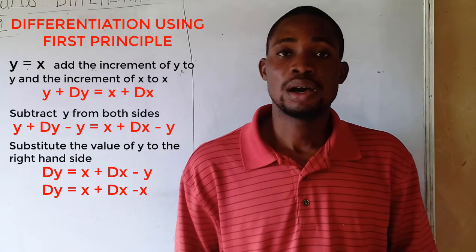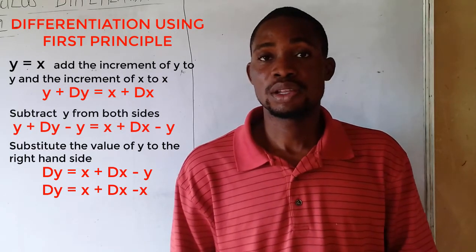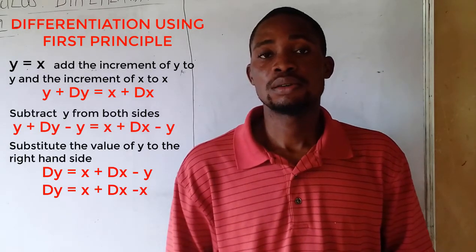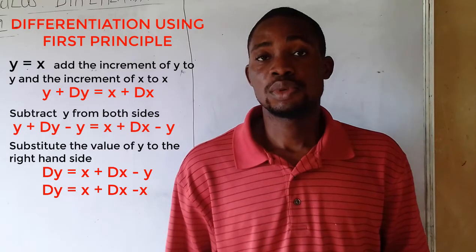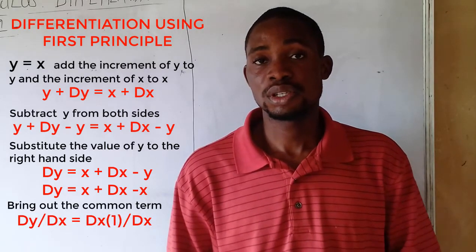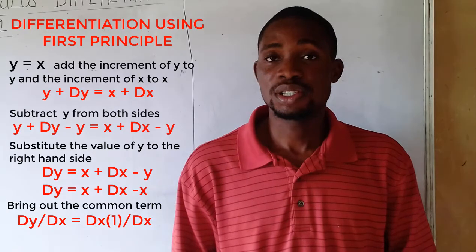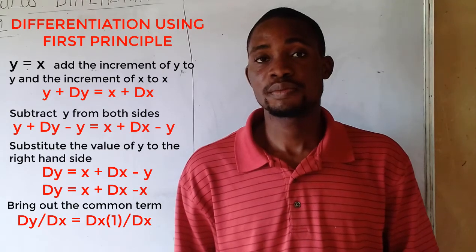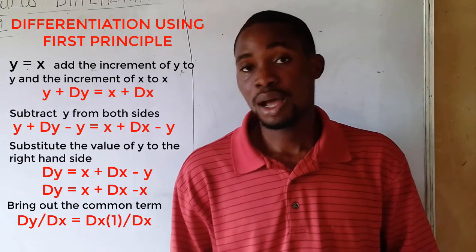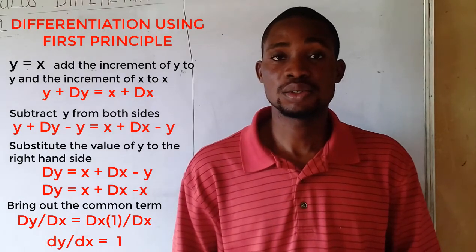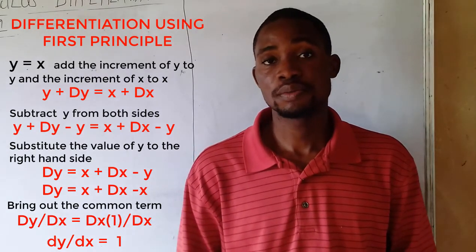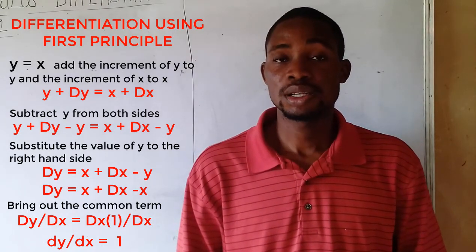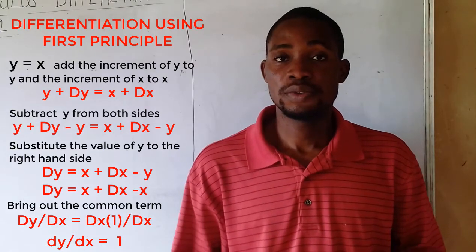From the right-hand side, the x terms cancel out. Then we bring out the common factor δx on the right-hand side, giving us δy over δx equals δx plus δx — which simplifies to 1. Therefore, the differential of y equals x is dy/dx equals 1. That's how to solve questions using first principle.